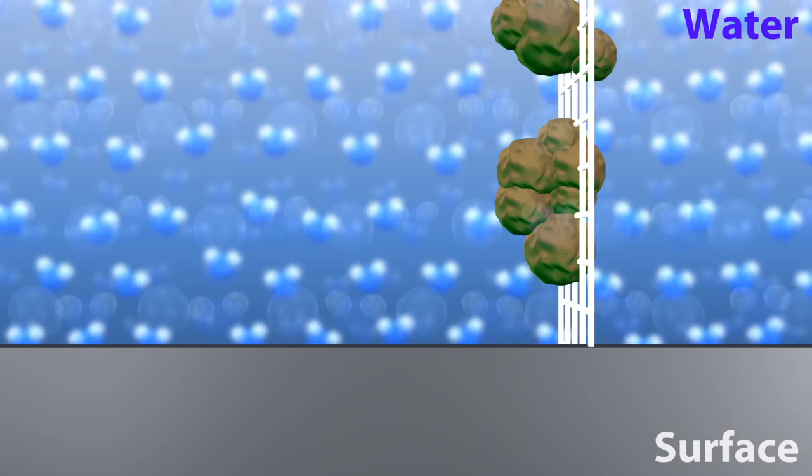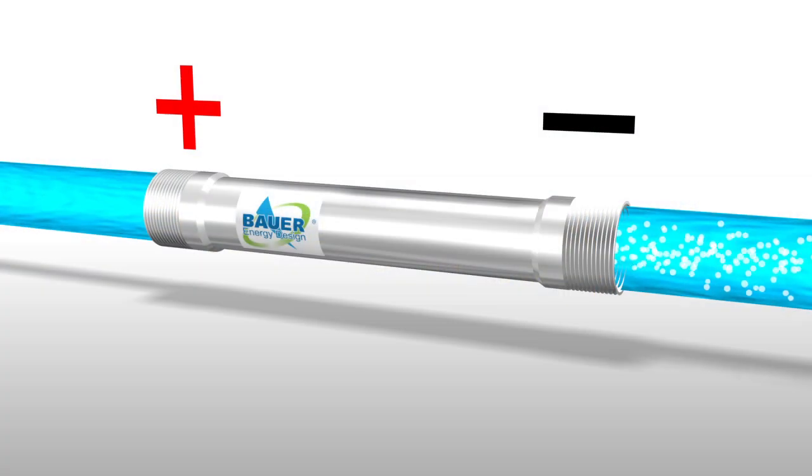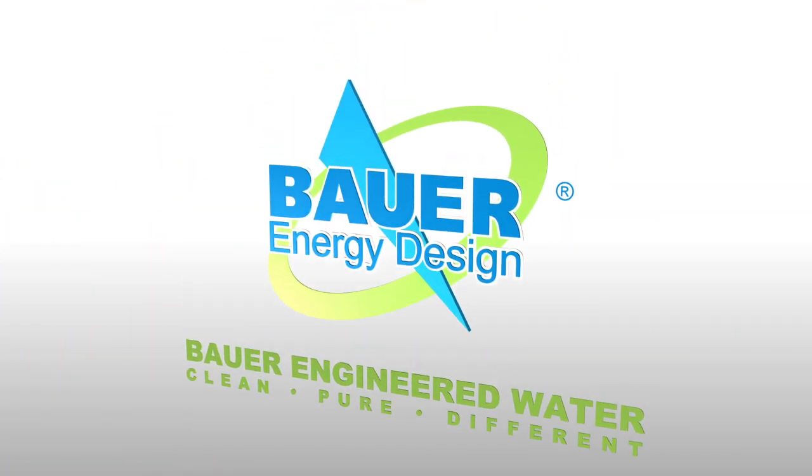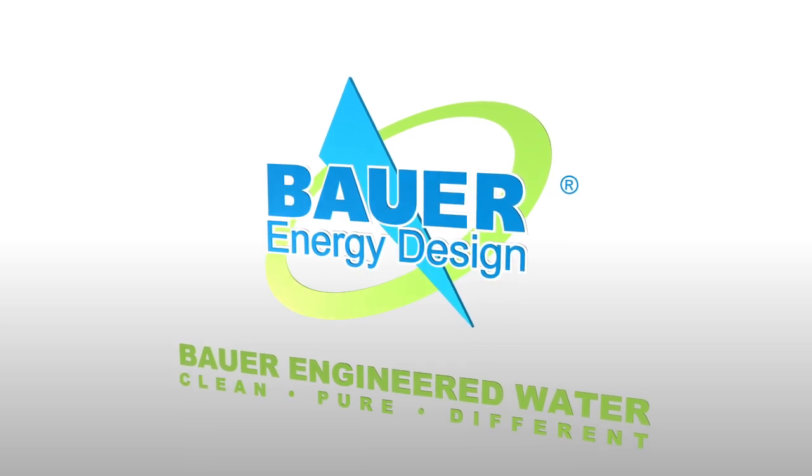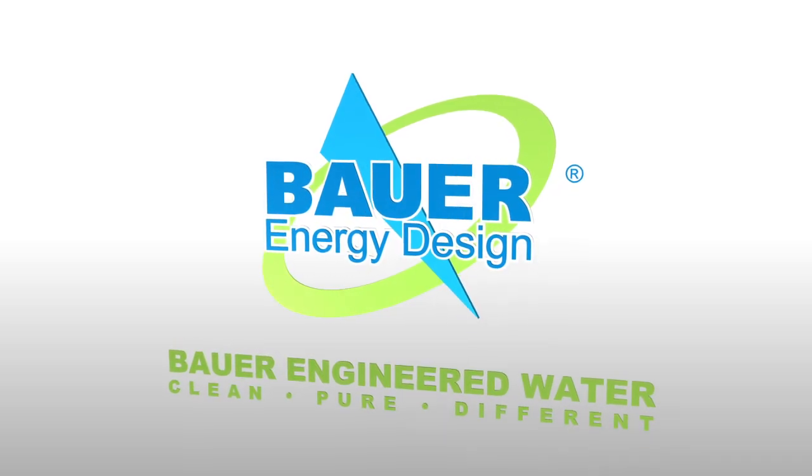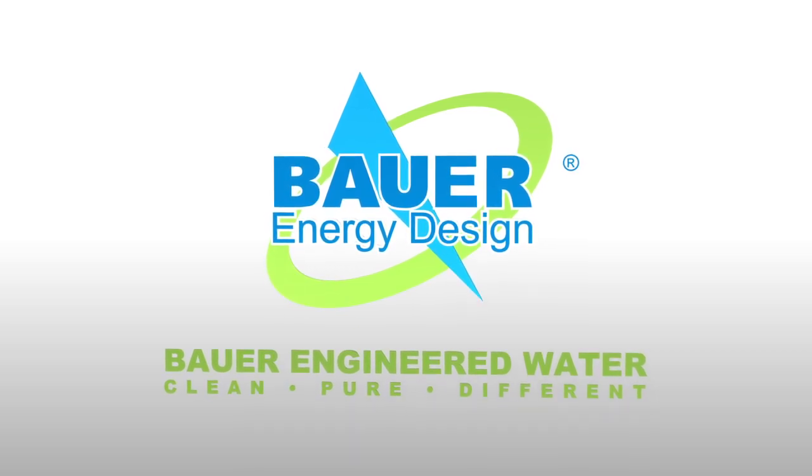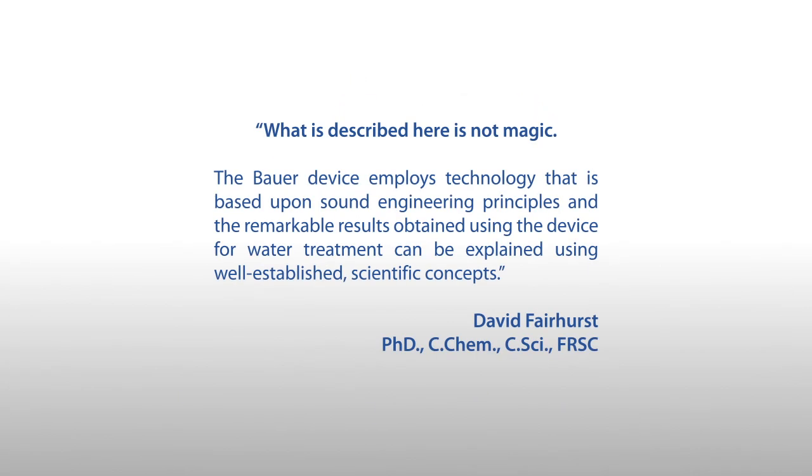The Bauer water system is a highly efficient nanobubble generator that relies on nothing but the movement of water to supply an abundant amount of nanobubbles to consistently prevent the formation of biofilm and facilitate the removal of microscopic contaminants by improving standard water filtration equipment efficiency.